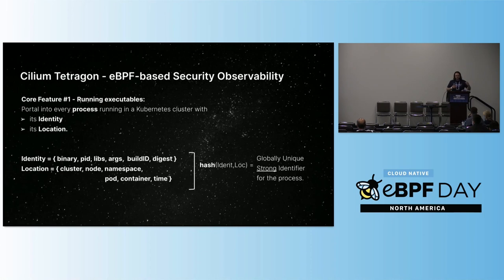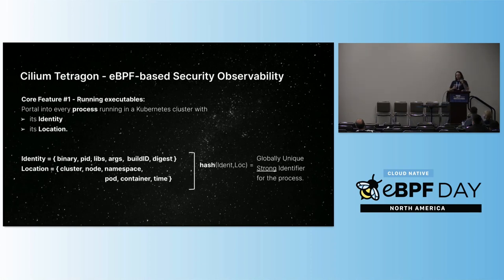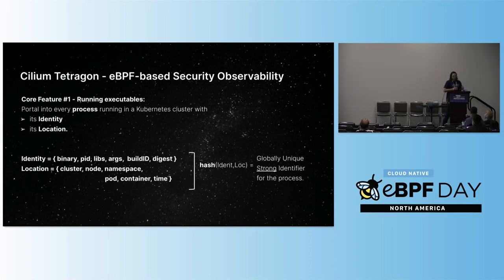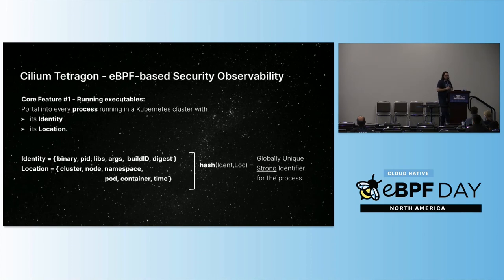That gives you an identity, but you also need location. Inside Kubernetes, location means: cluster, node, namespace, pod, container, and time. Time is important — you care about when this thing was actually run: was it yesterday, two months ago, five minutes ago? When you put identity and location together you get a unique ID. You can put that in a database and query it: when did this execute, what executed between these times on this node — slice the data any way you want and create interesting data sets.